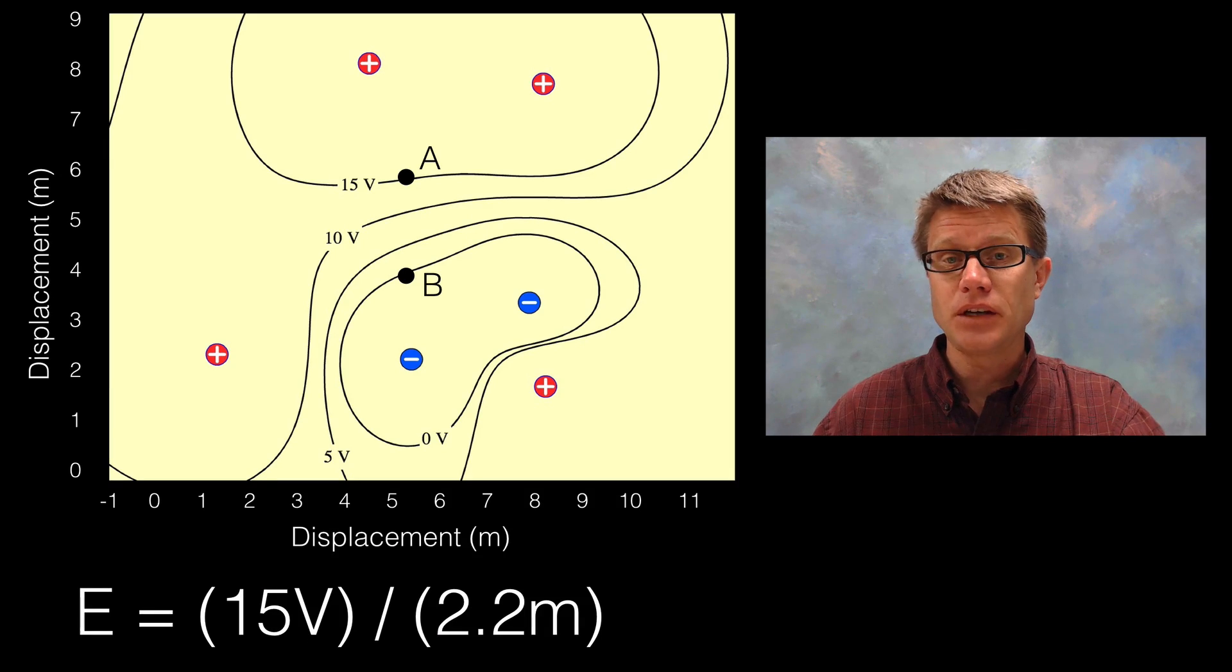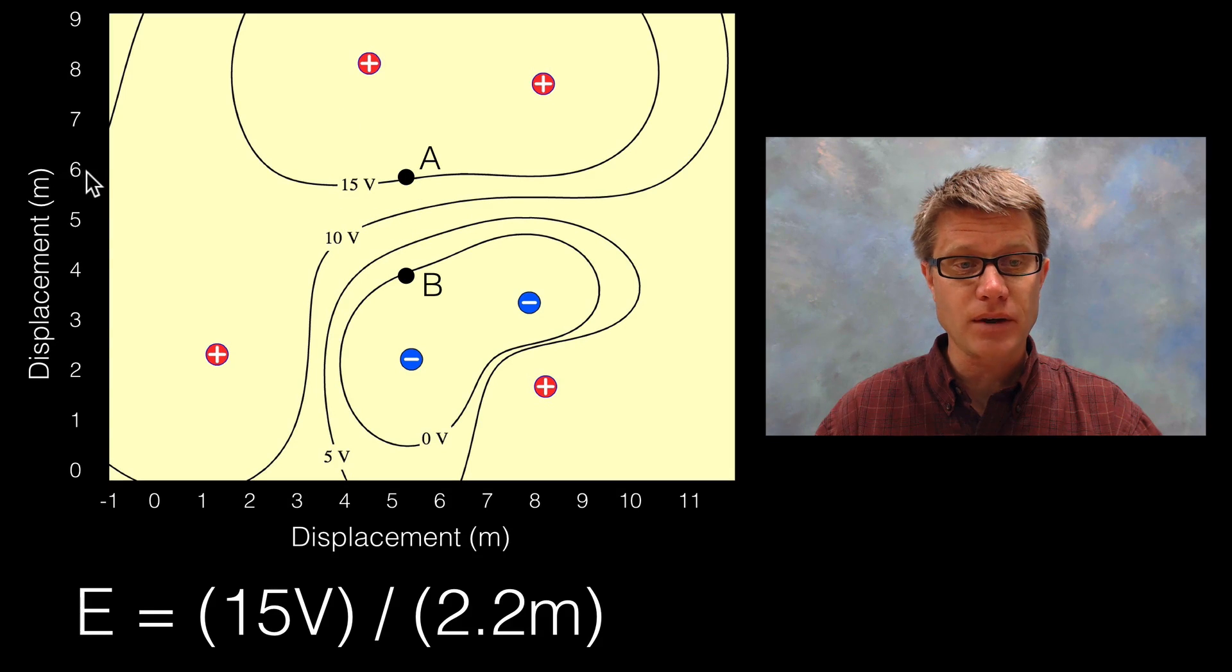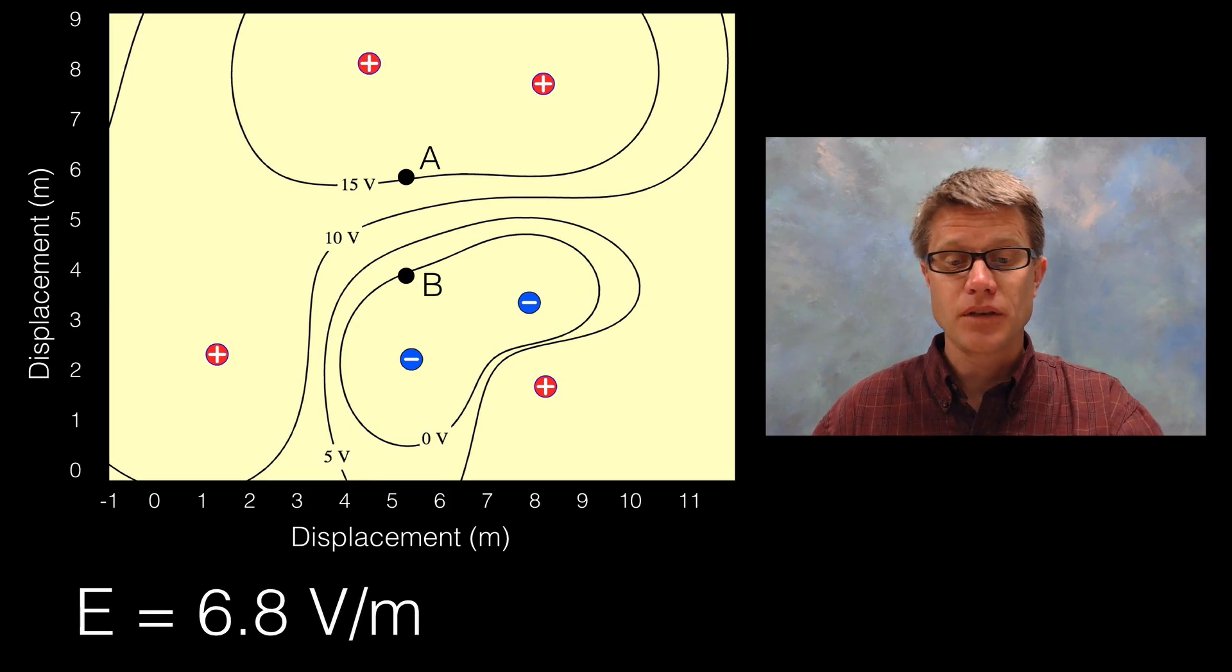I'm getting 15 volts as a difference between the two. And then how did I get 2.2 meters? Well, this looks like around 6 and this looks like around maybe 3.8. I'm not perfect obviously, but that's going to be the distance between those two. So then I would just say it's 6.8 volts per meter.